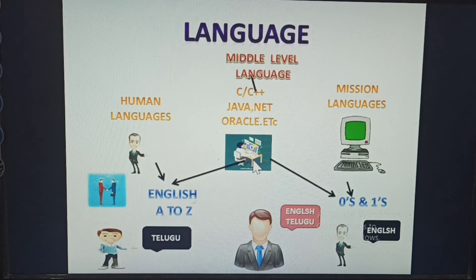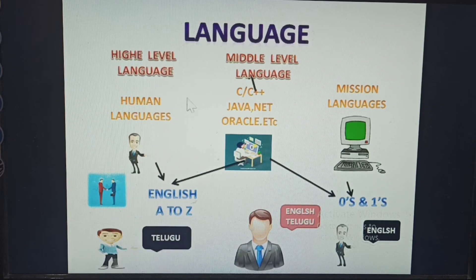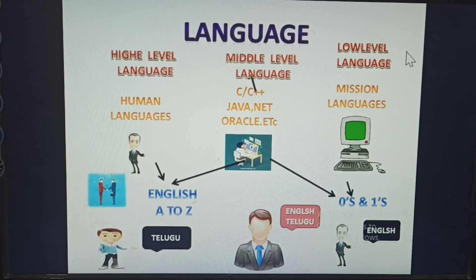Converting the human language into the binary section — this is very easily understood. Human languages means what humans know: mother tongue or other languages. That language is converted into the middle-level language, then into the binary section. Whatever is given in Telugu or other languages, the binary section converts back through the middle language and gives the output. The human language is called a high-level language. Machine language is called a low-level language. So, high-level language and low-level language both communicate through middle-level language.